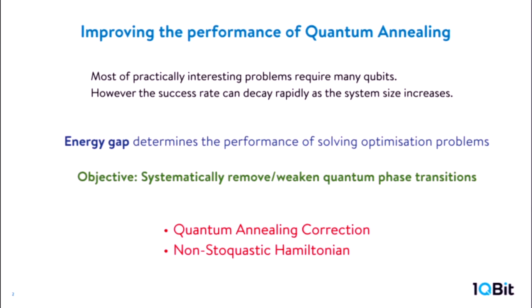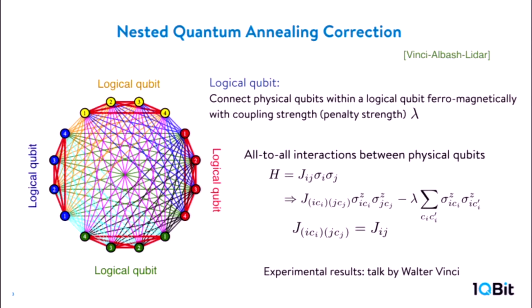In this talk, we consider two ingredients. One is quantum annealing correction, which is a programmable error correction method that Walter discussed two days ago. The other ingredient is this non-stochastic Hamiltonian. We start with nested quantum annealing correction.